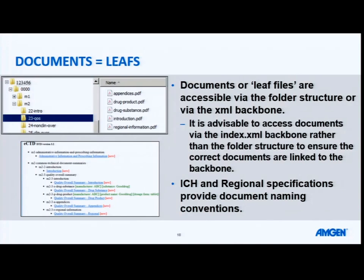A document or leaf can be accessed two ways. You can go into your folder structure and manually open up the PDFs and navigate that way through your submission. However, it's really advisable to go through your XML, and there are two reasons for this. You want to make sure that the correct document has been linked to the correct reference on your XML. It's also just easier — if you go into a folder structure that has 20 or 30 documents, a lot of the file naming will look very similar, so it can be difficult to figure out which document you're trying to open.